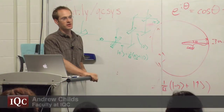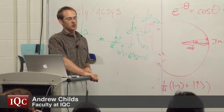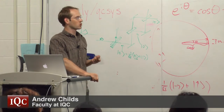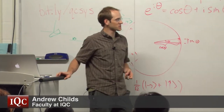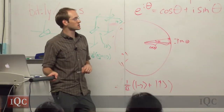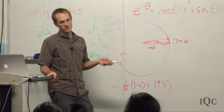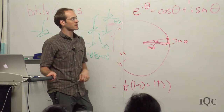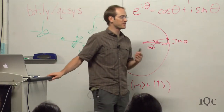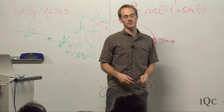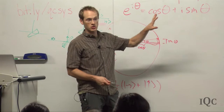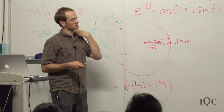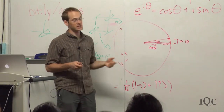So I want to tell you about the no-cloning theorem, which is about a fundamental limitation on what you can do with quantum mechanical systems, which is really quite relevant to quantum key distribution — something you're going to hear more about later. The fact that it's not possible to copy quantum states, which is what this no-cloning theorem says, is really key to the success of quantum key distribution.